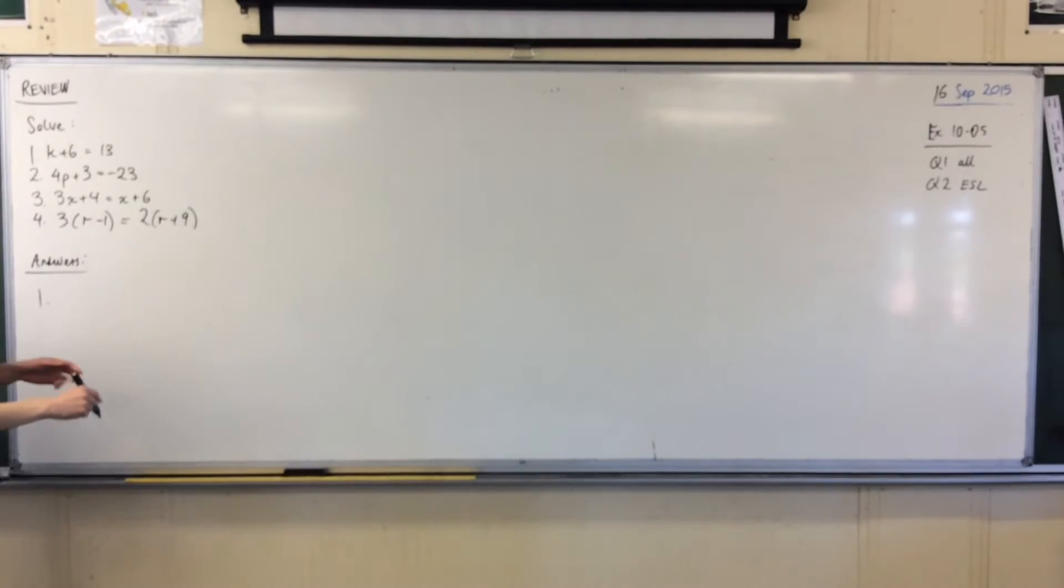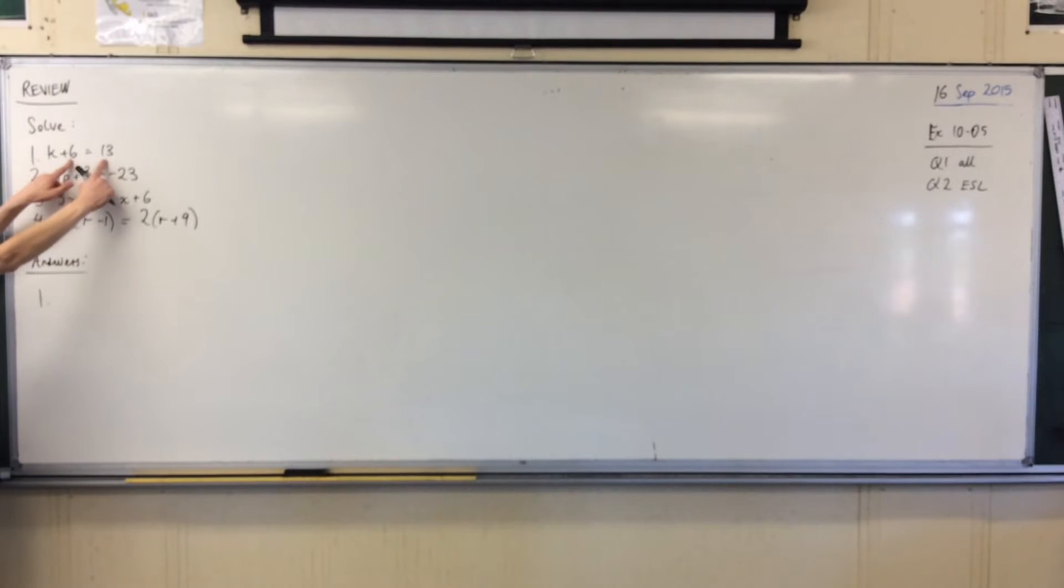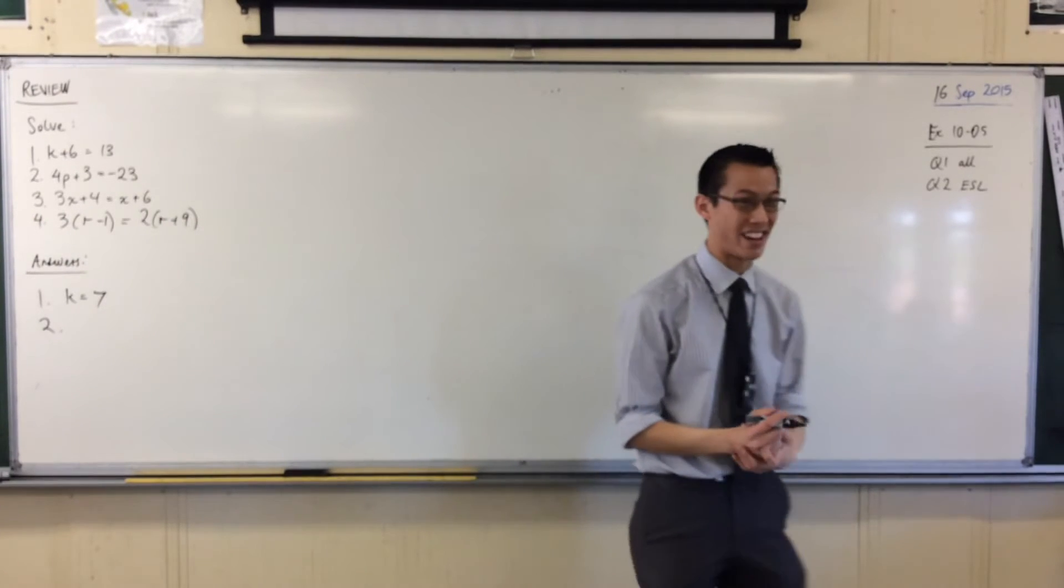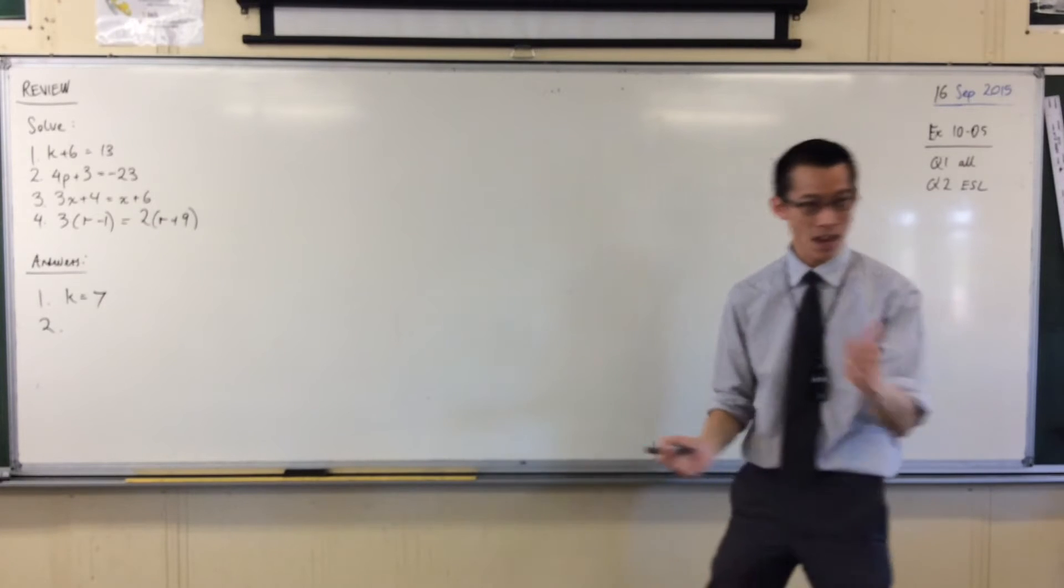I think Adam, your hand was up first. Take away six, take away six. That'll give me k equals seven. Fantastic. So that's probably the only one where you could really just write one line. We subtracted six from both sides. Great.